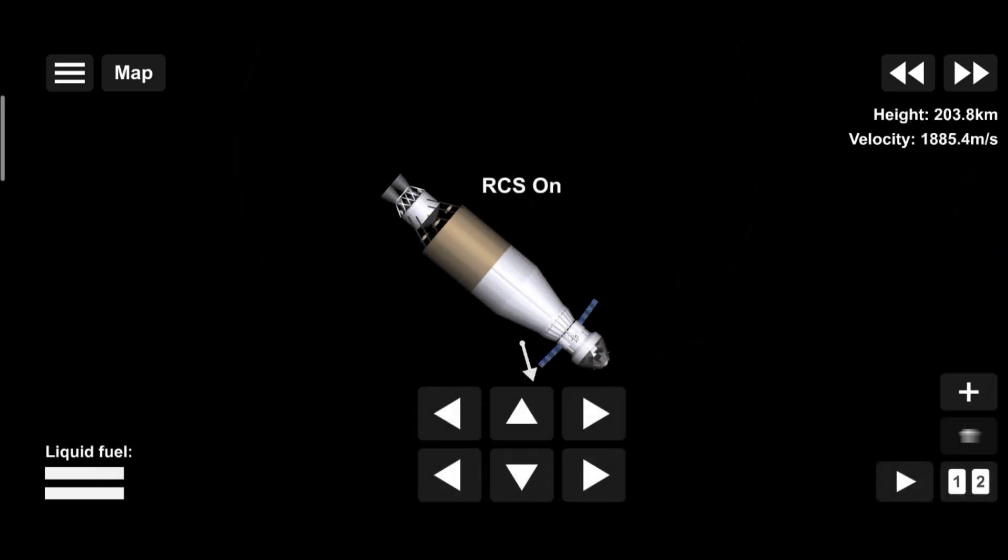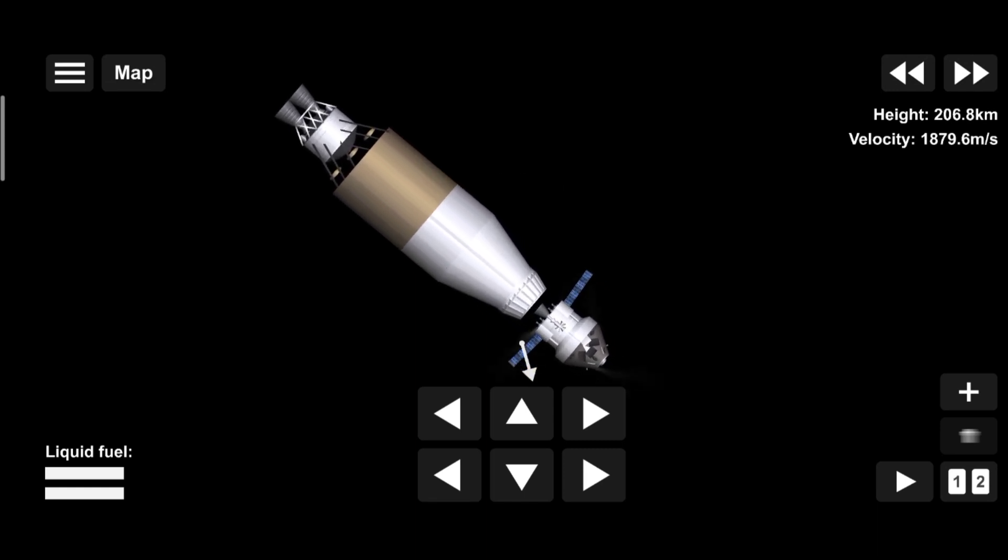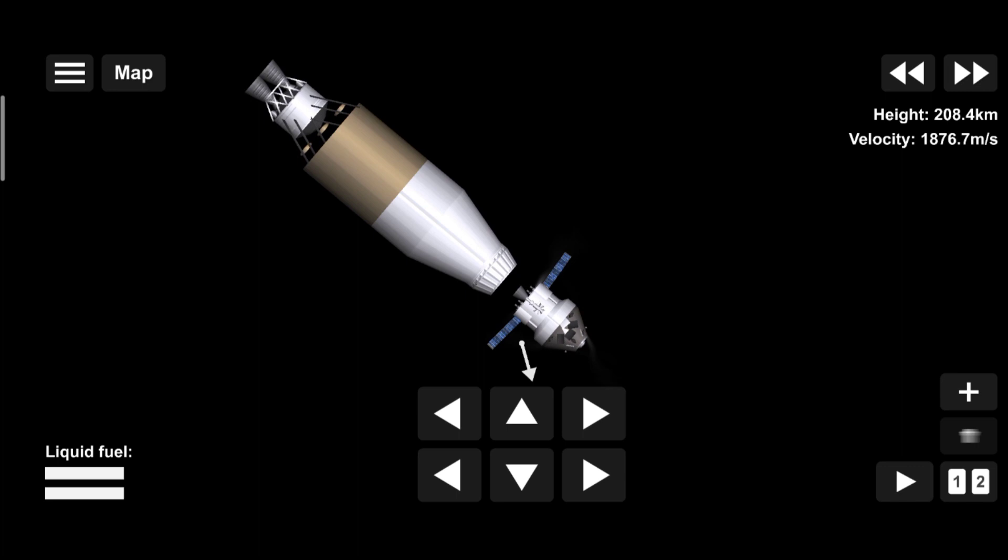Once the burn is complete, the upper stage of the SLS is jettisoned and the crew aboard Orion coast for several days toward all that awaits them at the Moon.